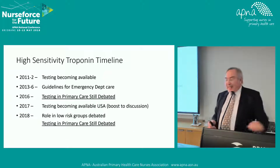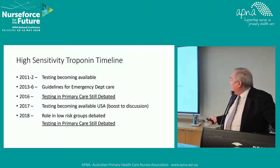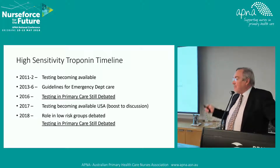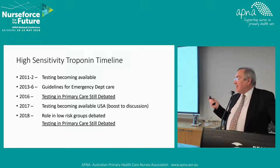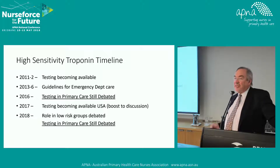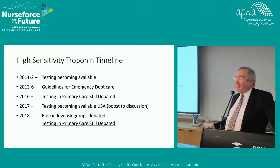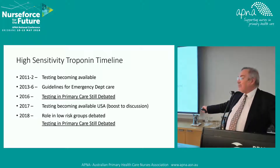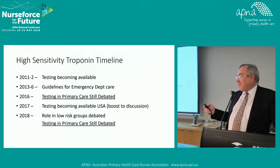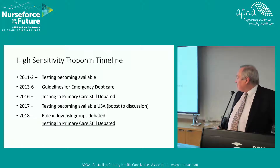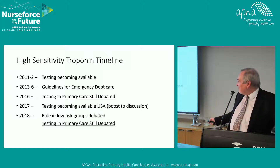This is the high sensitivity troponin timeline. Around 2011 to 2012, the testing started becoming available — it's not a super new test, but its application matured over the last six or seven years. From 2013 to 2016, people were developing guidelines for use in emergency departments. By 2016, people were still wondering how it should be used in primary care. In 2017, the FDA started approving high sensitivity troponins in the United States, which means there's a lot more literature since then. The role of troponin in low-risk groups — which overlaps with the primary care question — is still being debated.